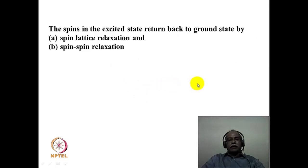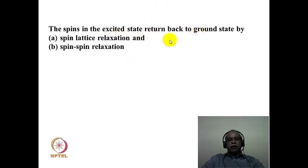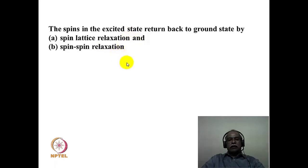Once the spins reach the excited state, they must return to the ground state to restore equilibrium population. This happens by two mechanisms: spin-lattice relaxation, where excess energy is transferred to the medium (the lattice), and spin-spin relaxation, where the excess energy is transferred to another spin. These are the two mechanistic features by which an excited spin state returns to the ground state in NMR spectroscopy.